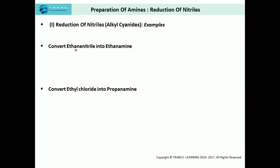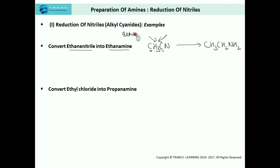Let us practice two examples. Convert ethane nitrile into ethane amine. Ethane nitrile is CH₃CN and ethane amine is CH₃CH₂NH₂. You might wonder why ethane nitrile shows only one cyanide group — there is a difference in naming. When using the nitrile suffix, we count the carbon atom of the cyanide group, so we write ethane nitrile. When written in terms of the cyanide group, this is the cyanide group and this is an alkyl group, so it is called methyl cyanide. Both names refer to the same compound.